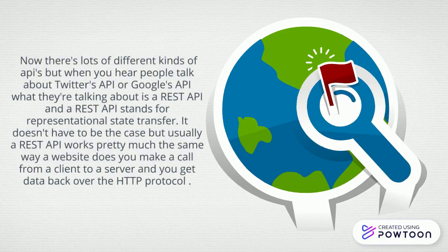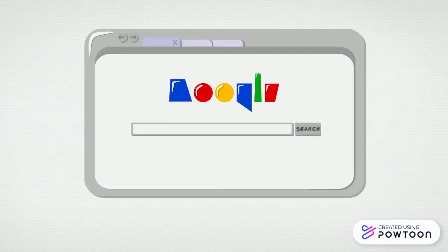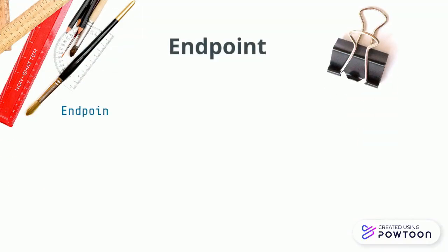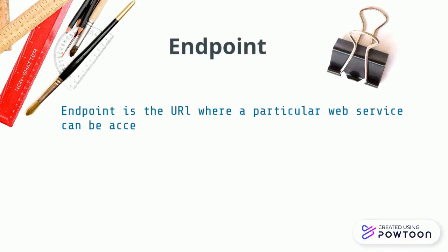It doesn't always have to be the case, but a REST API works pretty much the same way a website does. You make a call from a client to a server and you get data back. Now let's talk about endpoints. An endpoint is the URL where a particular web service can be accessed.